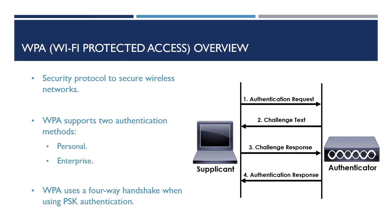WPA is a security protocol created by the Wi-Fi Alliance to make wireless networks more secure. There are two modes available within all three WPA versions: Personal and Enterprise. WPA Personal uses a key string, or pre-shared key, for client authentication — this is the mode we're focused on. WPA Enterprise is used in conjunction with an external RADIUS server and 802.1x, which won't be covered in this video.